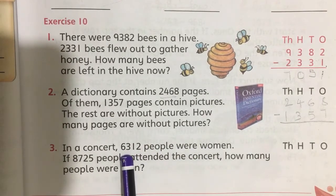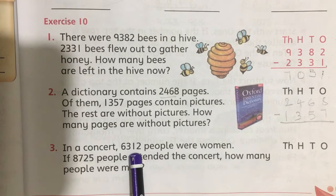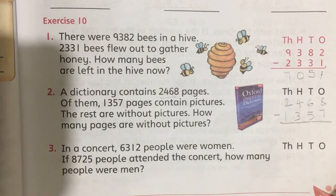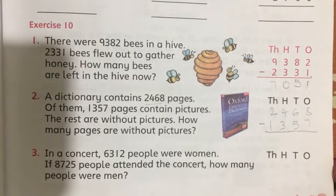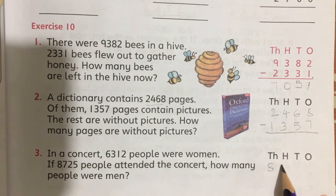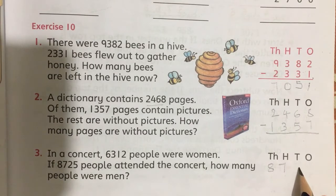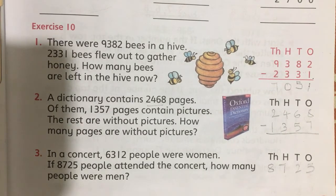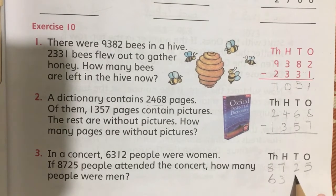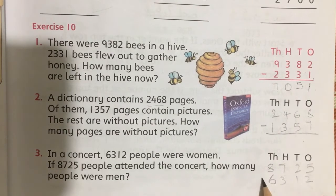How many women? 6,312 people were women. So you have to subtract the number of women from the total number of people. The total number is 8,725 people.